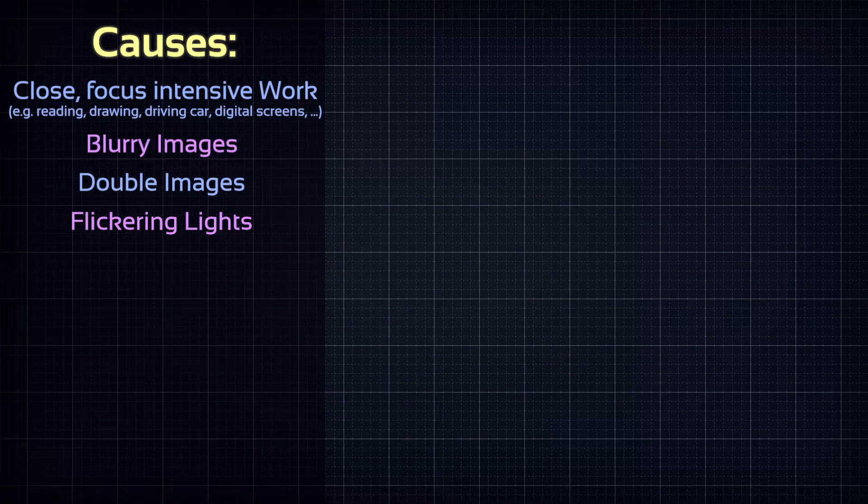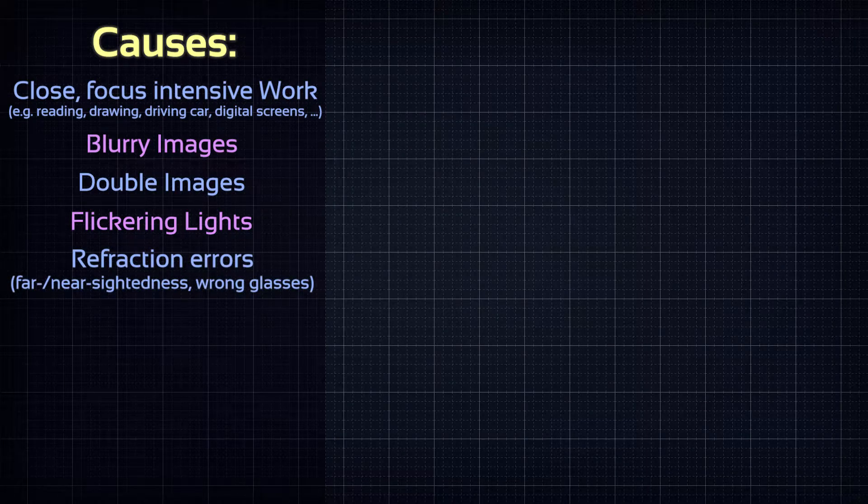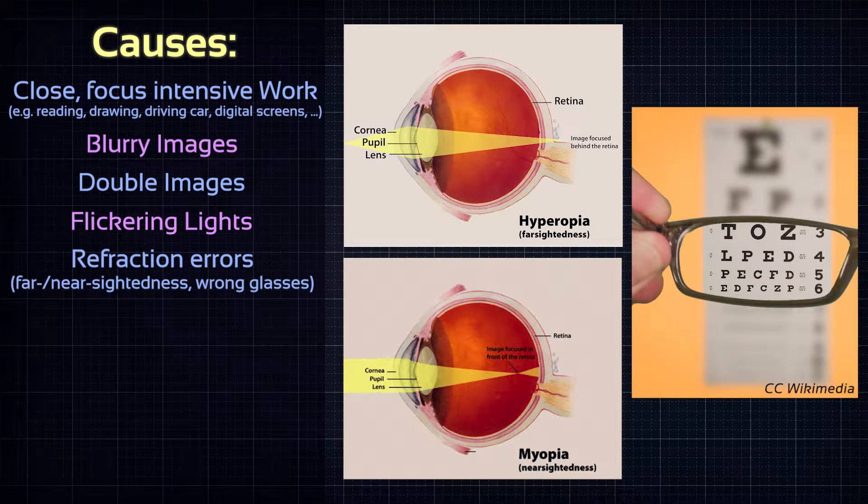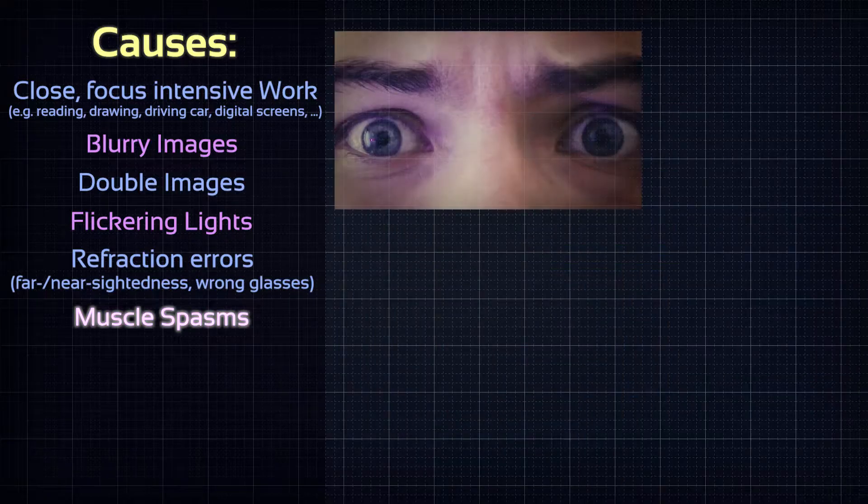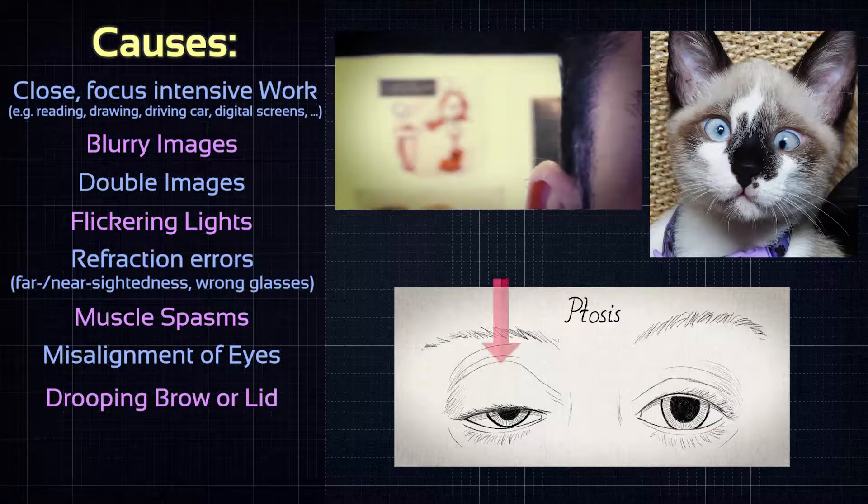And then there are more underlying causes of eye strain. For example, refraction errors of the eyes, so near- or farsightedness, or your glasses or contact lenses have the wrong prescription. Muscle spasms can exhaust them faster, misalignment of the eyes, or drooping brows or lids.